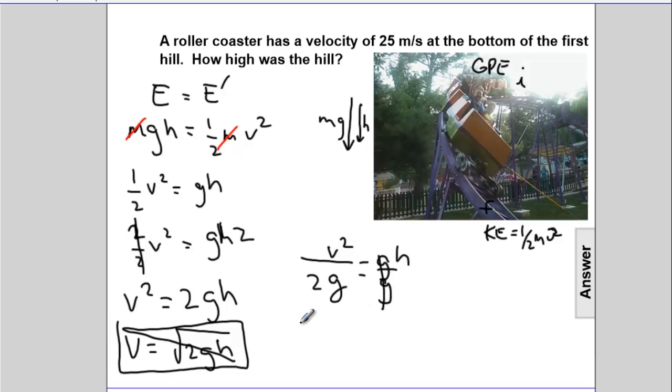And we're good to go. So the height that these kids fell through on the coaster, with the coaster, is V squared, which will be 25 meters per second, quantity squared, divided by 2 times 9.8 meters per second squared.